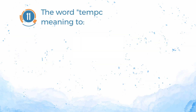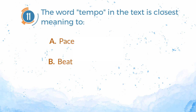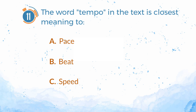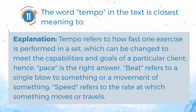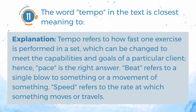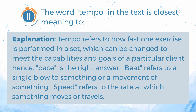Number 11. The word tempo in the text is closest in meaning to: A. Pace. B. Beat. C. Speed. The answer is A. Pace. Explanation: Tempo refers to how fast one exercise is performed in a set, which can be changed to meet the capabilities and goals of a particular client; hence, pace is the right answer. Beat refers to a single blow to something or a movement of something. Speed refers to the rate at which something moves or travels.